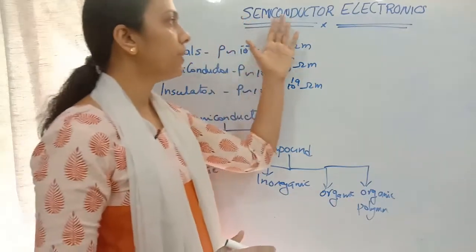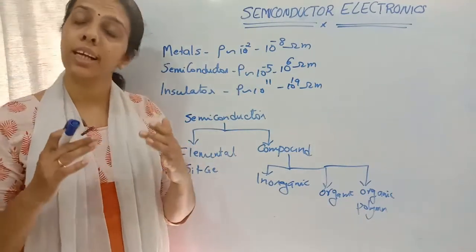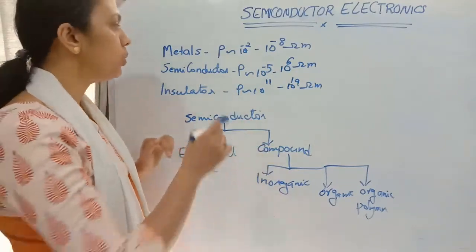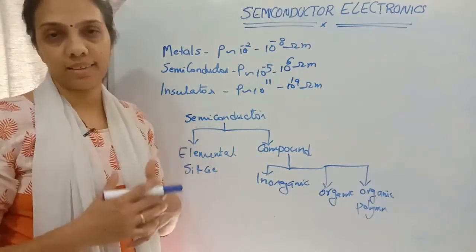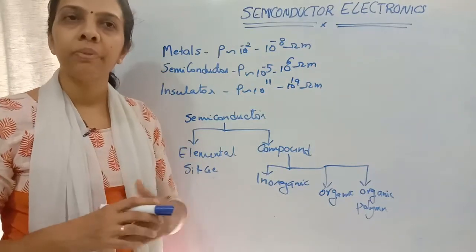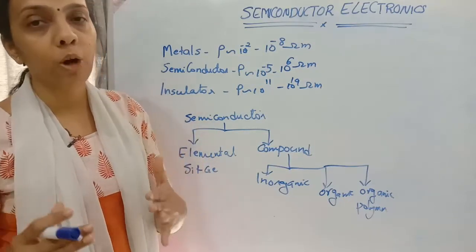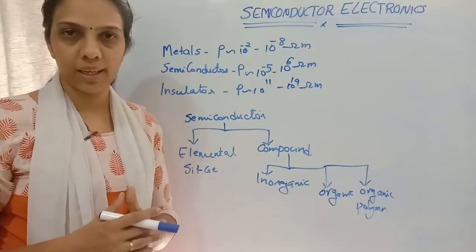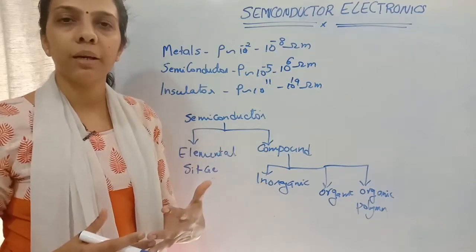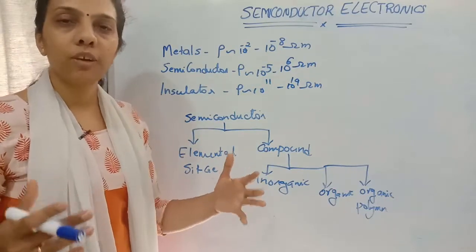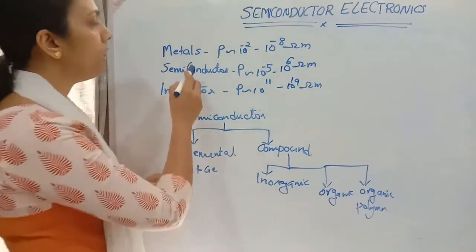First, we are going to start with semiconductor electronics. Solids are mainly classified according to their conductivity into metals, semiconductors, and insulators. Metals are conductors — current will easily pass through them because they have a large number of free electrons. Electrons are the charge carriers, so with more free electrons, current can easily pass through the circuit. They are called conductors.